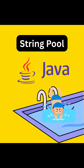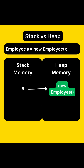Today let's understand the concept of string pool in Java — what it is, how it works, and why it even exists. Let's start with a simple line: Employee A equals new Employee. Here A is a reference stored in stack memory, and the actual employee object is stored in the heap memory.